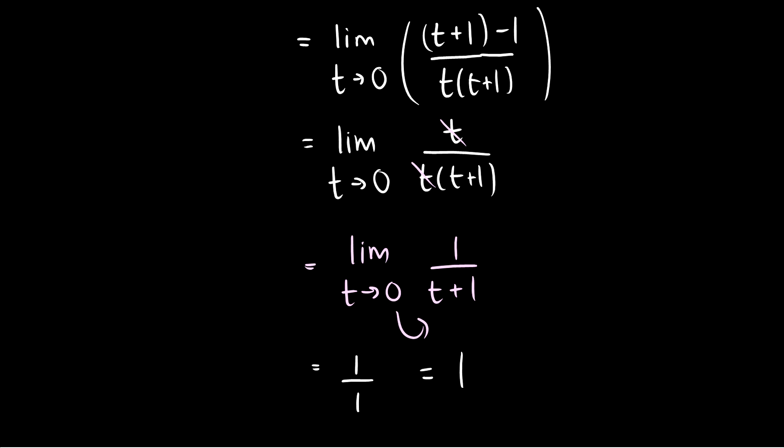We can now just plug in 0 for t, and we get 1 over 1, which is just equal to 1. So working with fractions and simplifying gives us a limit we can deal with.